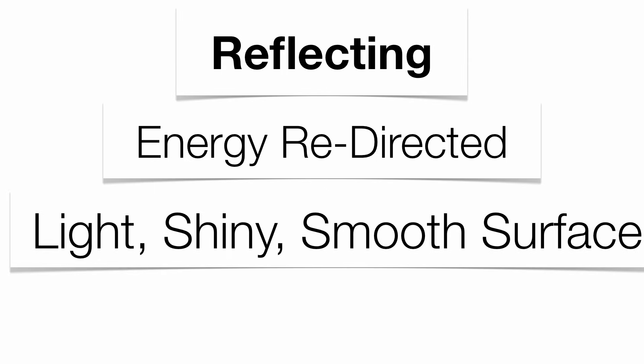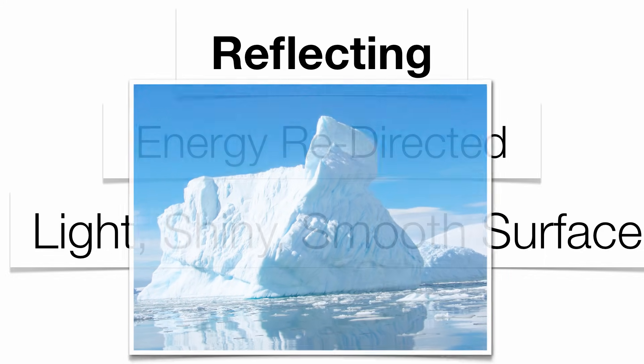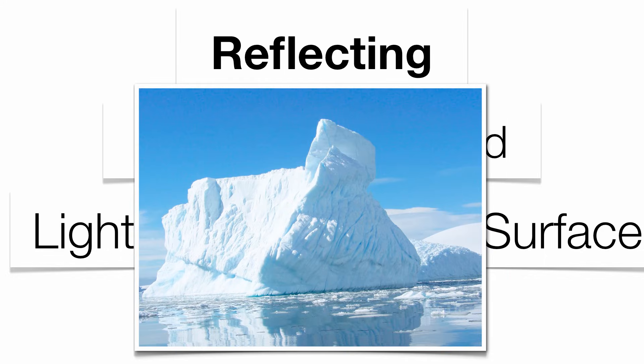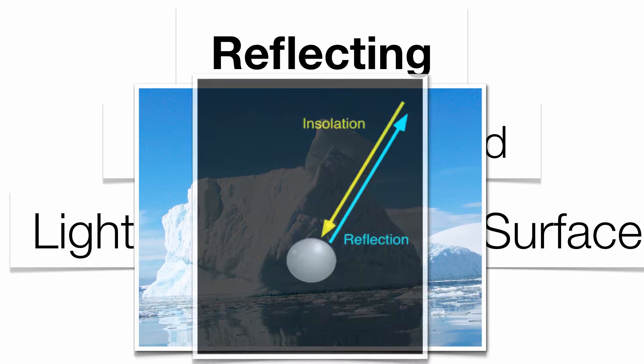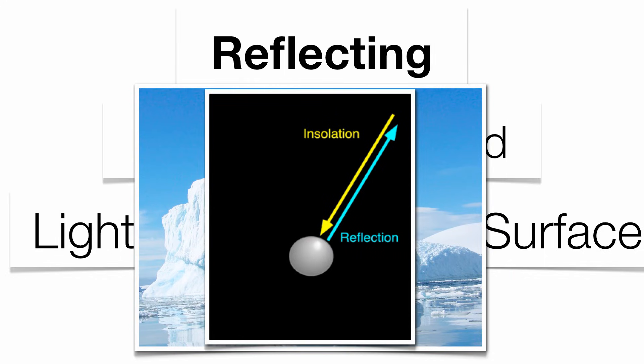First off, we'll start with reflecting. This means that energy can be redirected into another direction. Usually, this is going to happen with really light, shiny, smooth surfaces, much like freshly fallen snow or perfectly smooth water. So what's going to happen here is energy comes in but gets reflected right back in the direction from which it came.